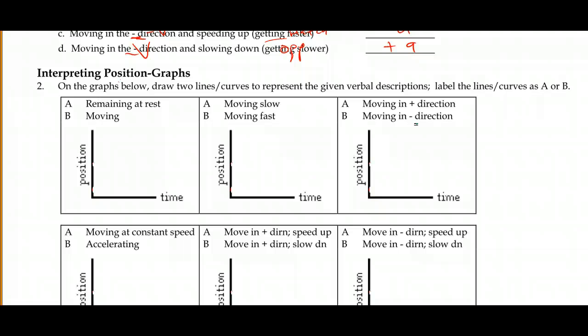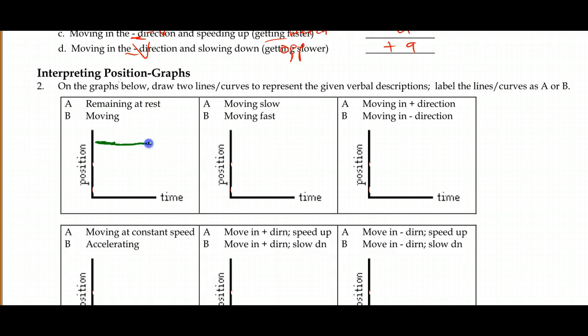On the graphs, we'll draw some different curves or lines to give examples of the types of motion described. Starting with remaining at rest — we're not changing location — so that's a straight horizontal line. We're at the same place for all points in time.